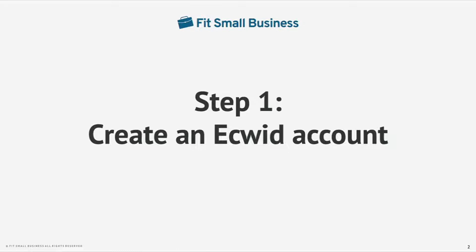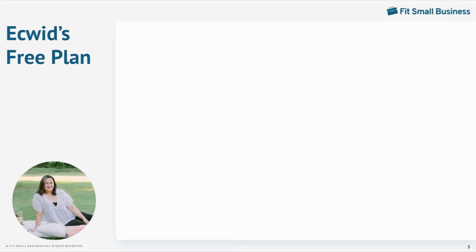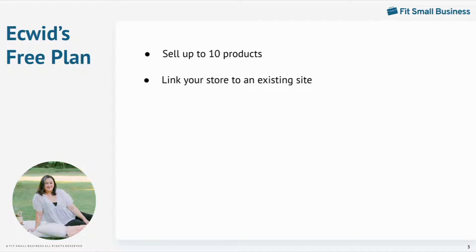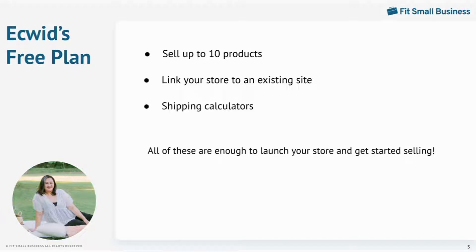The first step to setting up an Ecwid store is to create an account. Ecwid gives you a free plan to start with. Under it, you can list up to 10 unique physical products, link your store to an existing website, and get access to shipping calculators — enough for you to launch your store. As you go through the process, you can decide whether upgrading to a paid plan is something that your business needs.